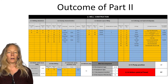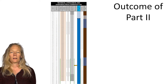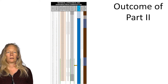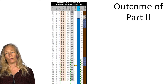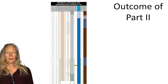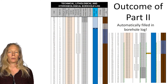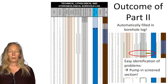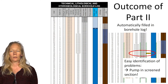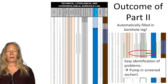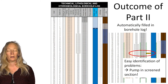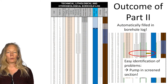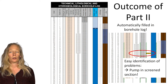A second outcome of Part 2 is the visual representation of all the technical and lithological information within a borehole log that is automatically filled in. If we zoom in, we can for instance see that the pump is positioned within a screen section. This is a significant problem — a pump should never be located in a screen section — so an error message will automatically appear at the top of the borehole log. Such a visual representation can be very helpful in order to quickly remediate such technical problems.